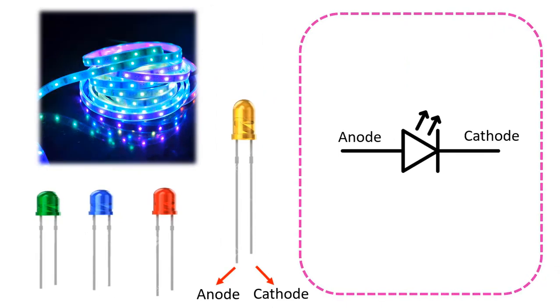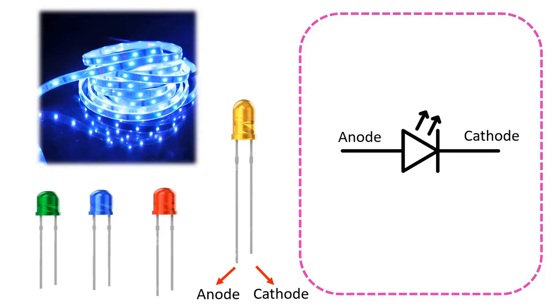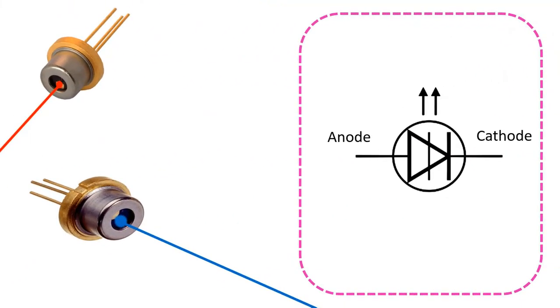The symbol of LEDs, which we know as the abbreviation of the initials of the words light-emitting diode, is shown with arrows on the diode symbol, which indicates that it emits light. A laser diode is also a light-emitting diode.